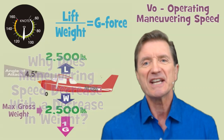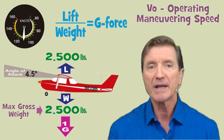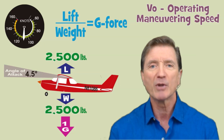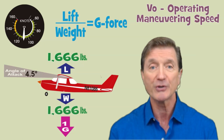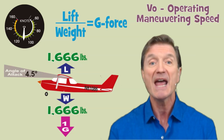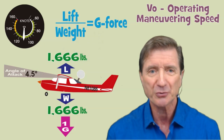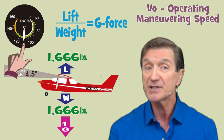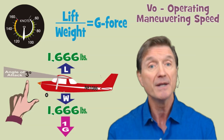Here's why. Let's say it takes a 4.5 degree angle of attack at 110 knots to maintain level flight in an airplane operating at its maximum gross weight of 2,500 pounds. Now let's reduce the weight of that airplane by opening the door and tossing your flight bag out. Now the airplane weighs 1,666 pounds — yes, that's a mighty big flight bag — flying at the lesser weight of 1,666 pounds at the same speed of 110 knots means the wings can operate at the lower angle of attack of 3 degrees in producing the lift necessary to maintain level flight.